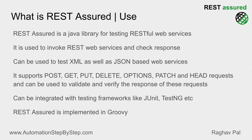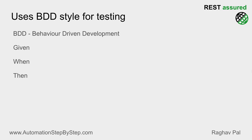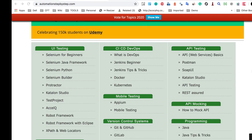Rest Assured is implemented in Groovy — this is a very important point and a common interview question. Rest Assured uses a BDD style for testing. BDD stands for Behavior Driven Development, where we use keywords like Given, When, and Then.